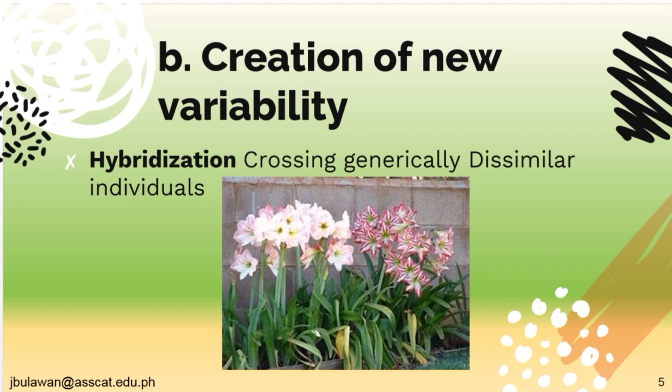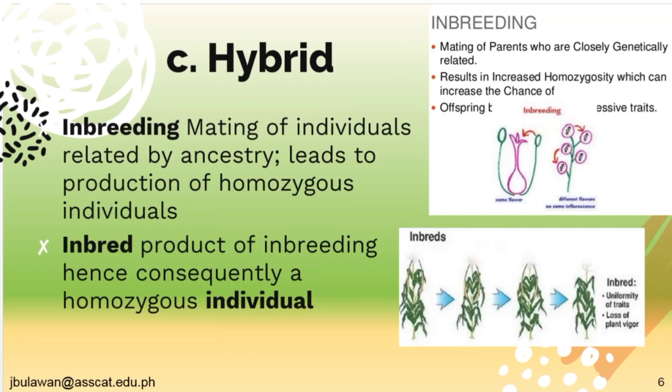The second major category is the Creation of New Variability. There will be hybridization, which is the crossing of genetically dissimilar individuals — the crossing of two individuals or plant species. Third is hybridization.